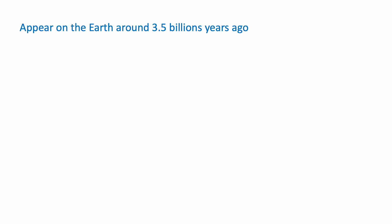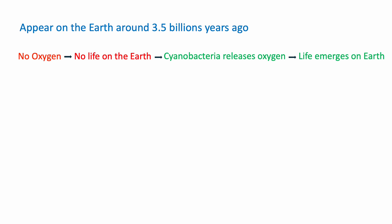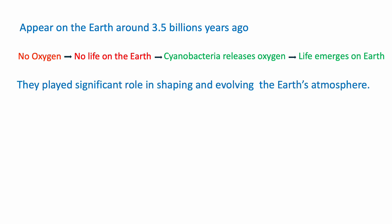Cyanobacteria appeared on Earth around 3.5 billion years ago. By continuously producing and releasing oxygen over billions of years, cyanobacteria converted Earth's environment from anoxic to an oxidizing one with free gaseous oxygen. Free oxygen is essential for shaping any life form, thus cyanobacteria are considered the first living entity on Earth.